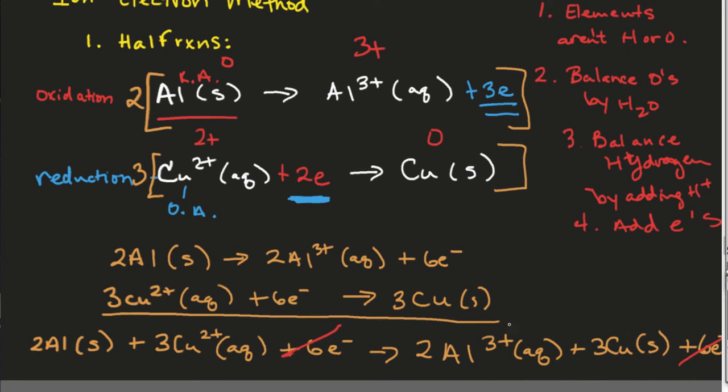The answer is yes. We should now be balanced both by charge and the number of atoms. And let's double check. We got 2 aluminums here, 2 aluminums there, 3 coppers here, 3 coppers there. The charge on the left is going to be 2 plus times 3, which is 6 plus. This is 2 times 3 plus, which is 6 plus. So we're good to go. All right? Do you understand? Good.